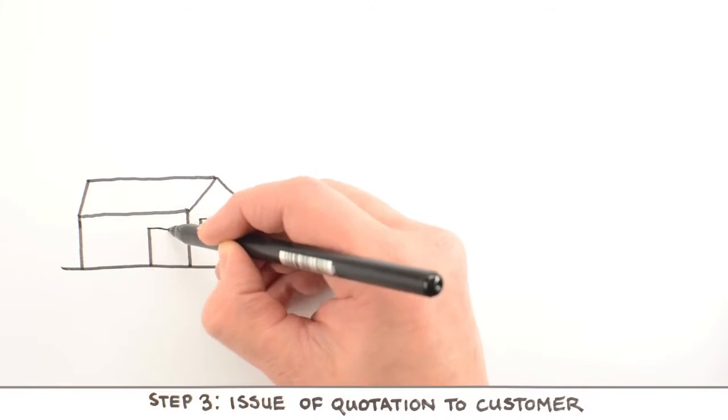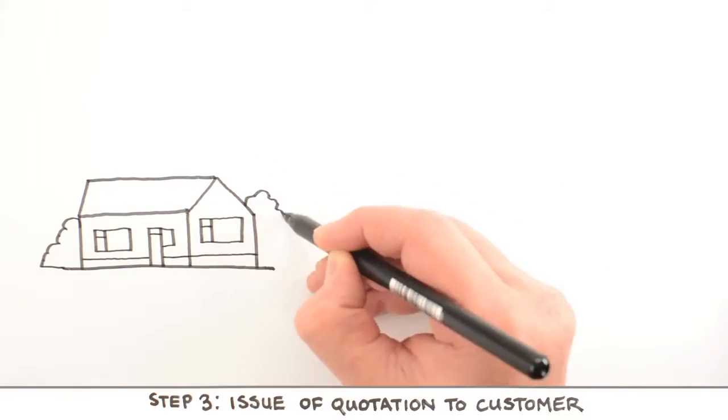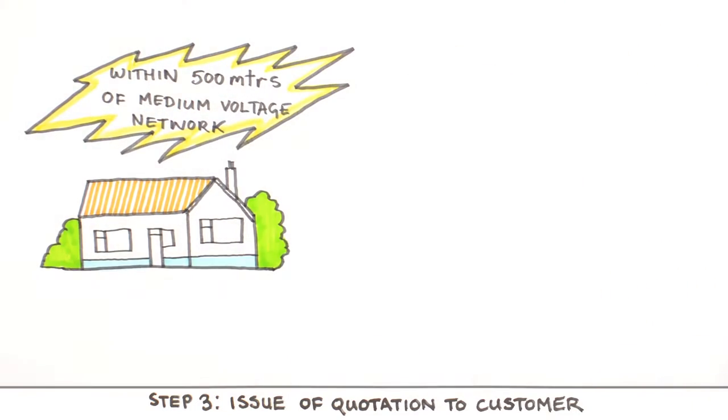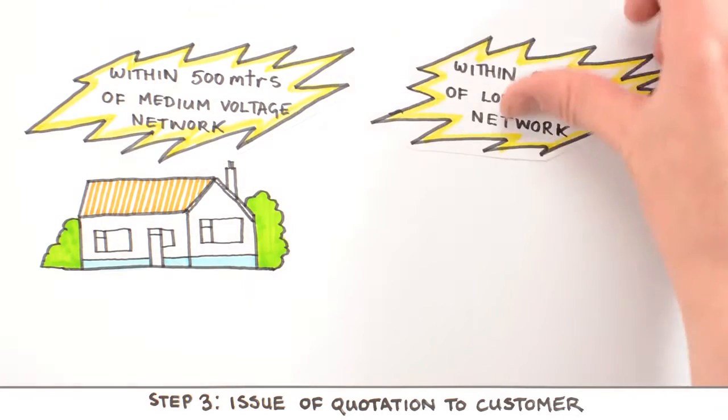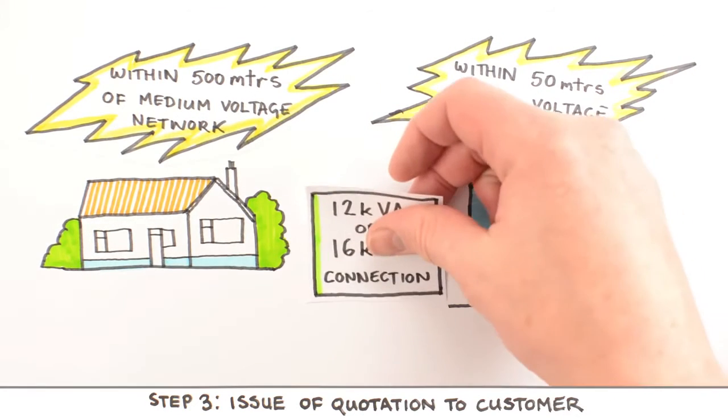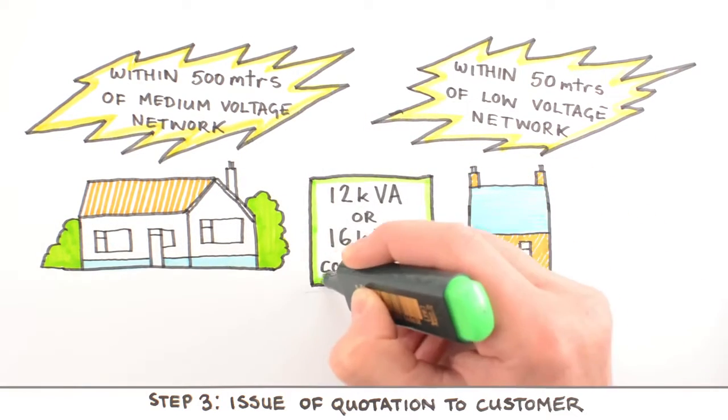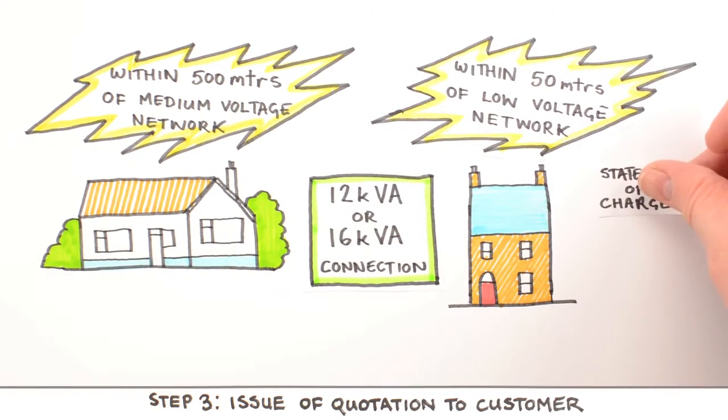If your connection is within 500 metres of the medium-voltage network in a rural area, or within 50 metres of the low-voltage network in an urban one, and you require a standard 12 kVA or 16 kVA connection, the charge applicable to your requirements are set out in ESB Networks Limited Statement of Charges.